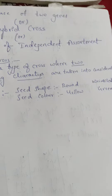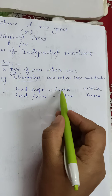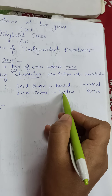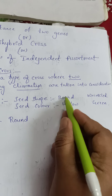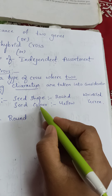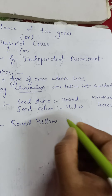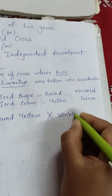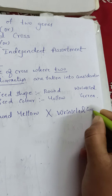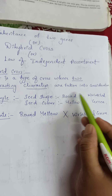Now we will write the parents. We write round and yellow on one side — that means both the dominant characters for seed shape and seed color. Round and yellow are the dominant characters, so I will write round yellow on one side, and it should be crossed with wrinkled and green. This is the first and very important step: writing parents. Two characteristic features — seed shape with round and wrinkled, where round is dominant and wrinkled is recessive.